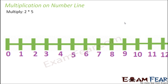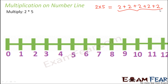Now how about multiplication on a number line? How do we multiply on a number line? This is also going to be very interesting. Let's say you want to multiply 2 and 5 — 2 into 5 would be how much? Now 2 into 5 means that 2 is added 5 times. So 2 into 5 is just another way of writing 2 plus 2 plus 2 plus 2 plus 2. Writing this out is tedious, so we write it in a simpler way. When I say 2 into 5, that means we are adding 2 five times.